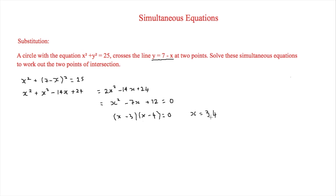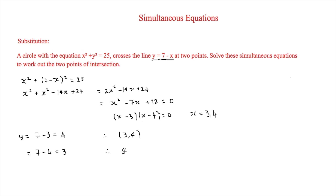To find y, we substitute both x values back into the easy equation y equals 7 minus x. For x equals 3: y equals 7 minus 3 equals 4, giving the point (3, 4). For x equals 4: y equals 7 minus 4 equals 3, giving the point (4, 3). Those are our two points of intersection.